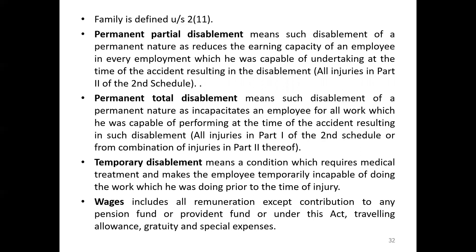Other definitions include factory, immediate employer, insurable employment, insured person, managing agent, miscarriage, and permanent partial disablement. Permanent partial disablement — which we discussed in the Workmen's Compensation Act — means such disablement of a permanent nature as reduces the earning capacity of an employee in every employment which he was capable of undertaking at the time of the accident.